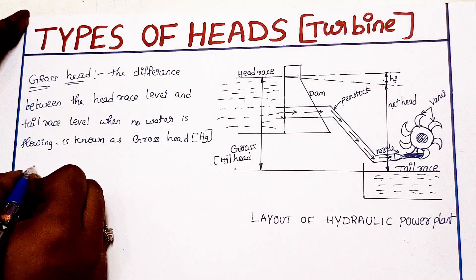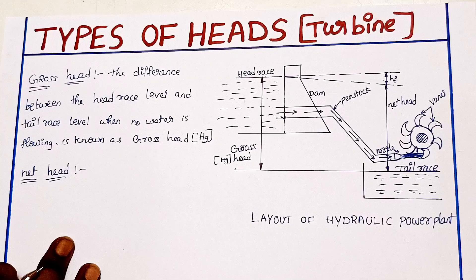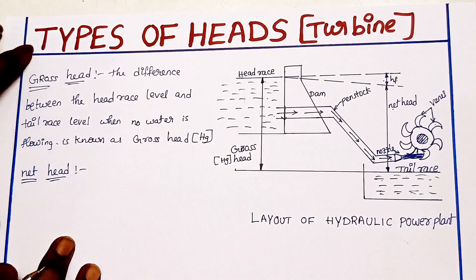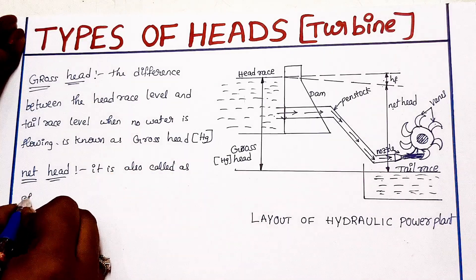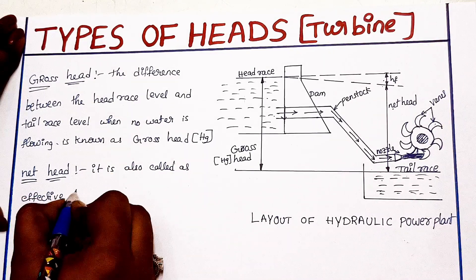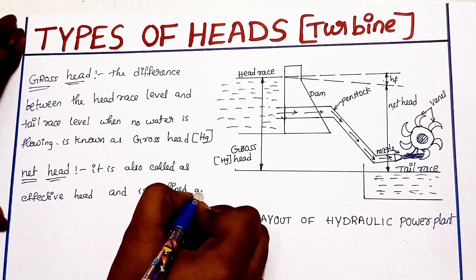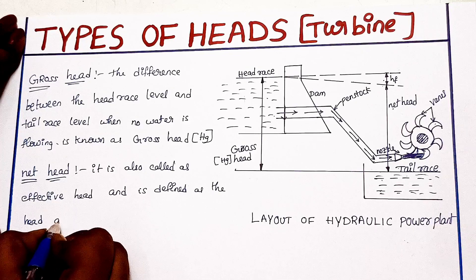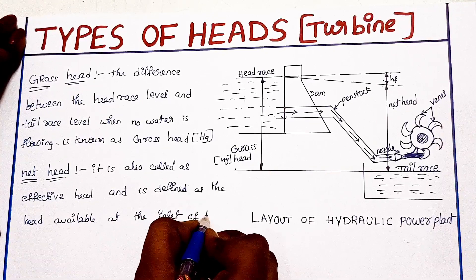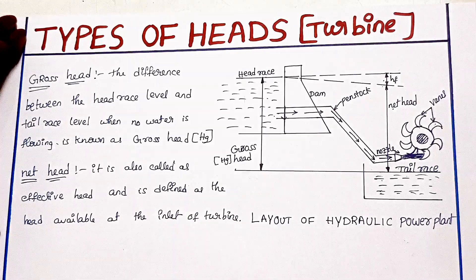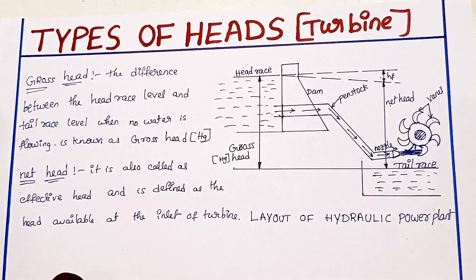Next is net head. Net head is also called effective head. It is defined as the head available at the inlet of the turbine — the head that is available after water flows from the dam through the penstock to the turbine inlet. That is the net head.